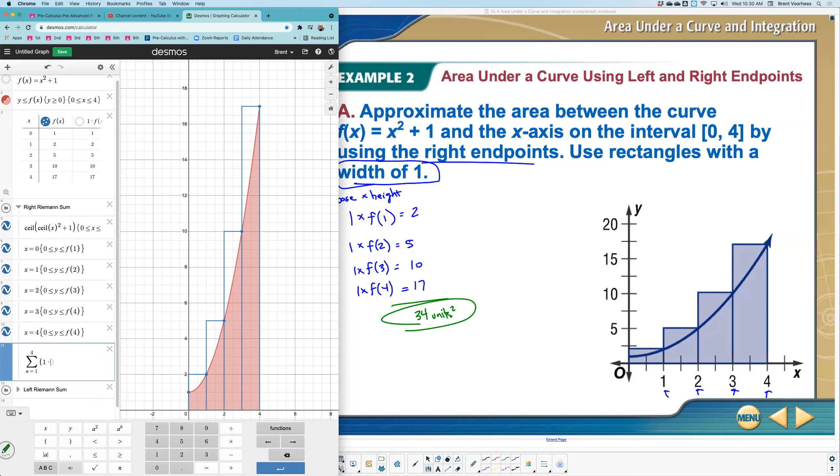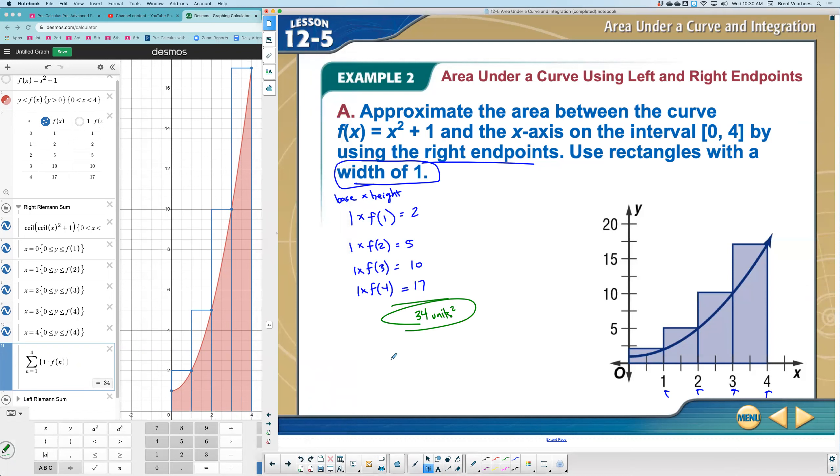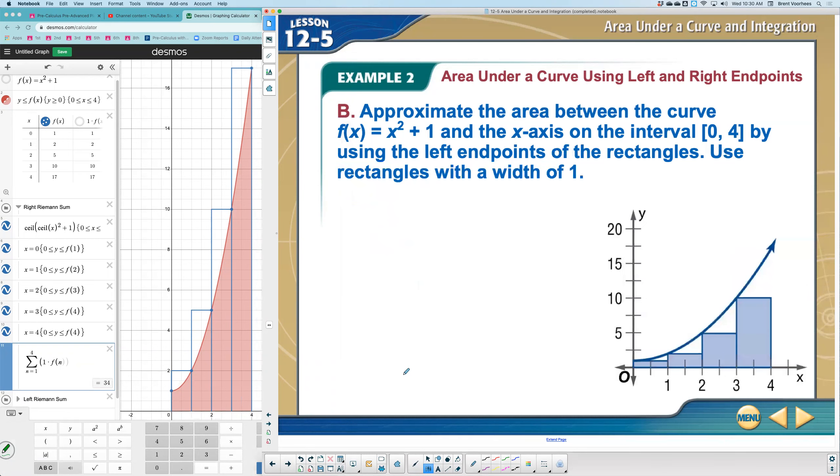And each time, what were we doing? We were multiplying one times f of whatever the end value is. And notice this gives us 34. So we did that one correctly. Now let's look at, and this is an overestimate on the area. Notice these blocks are larger than the actual area under the curve would be.